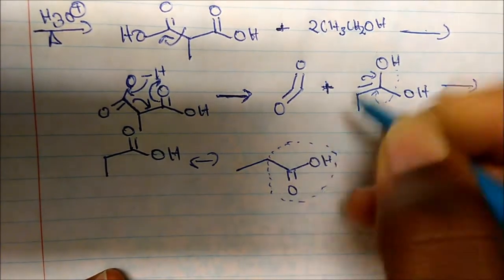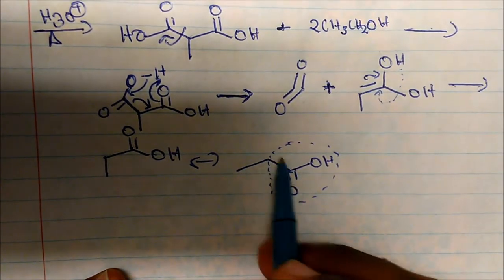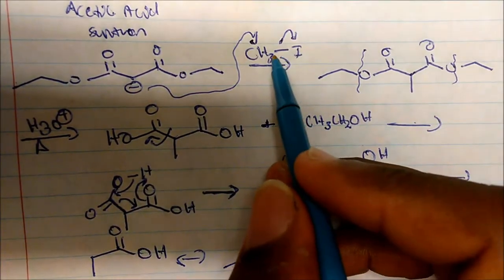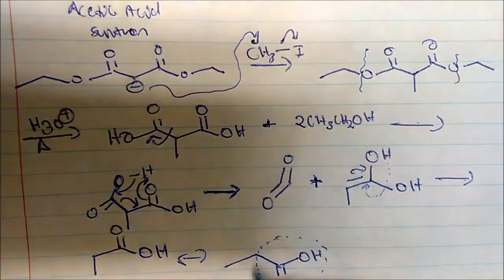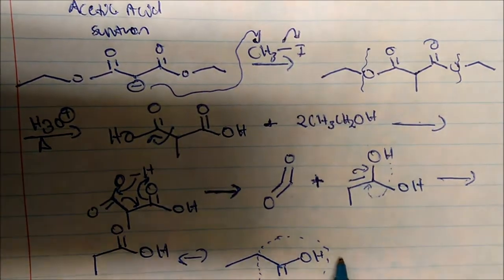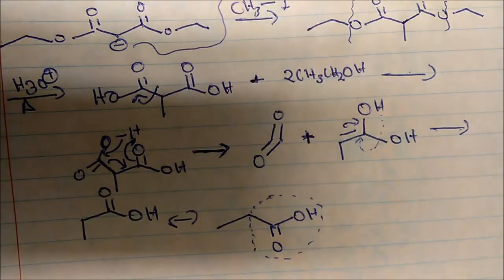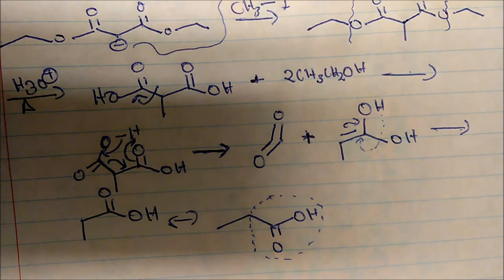And this is my acetic acid synthon that I was talking about. So diethyl malonate forms the acetic acid synthon plus an R group. In this case, what was the R group? Methyl iodide. So the methyl group actually was added on to the acetic acid synthon. So that's the mechanism and the general structure of what we're talking about here.